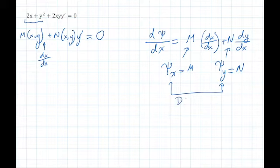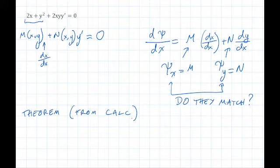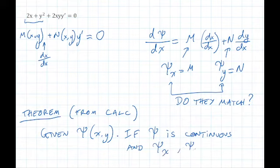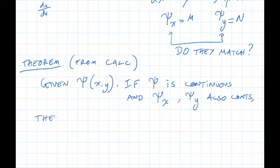In the general case, how do we ensure that they match? And for that we need a theorem from multivariate calculus. And the theorem says given a function psi of x and y, if psi is continuous in some rectangle on the xy plane, and the two partial derivatives psi sub x and psi sub y also continuous, then psi sub xy equals psi sub yx.